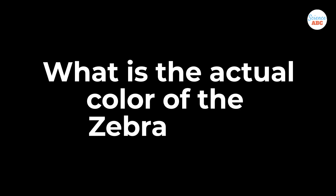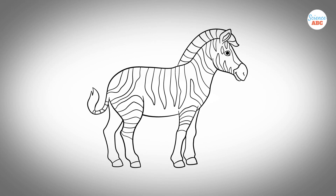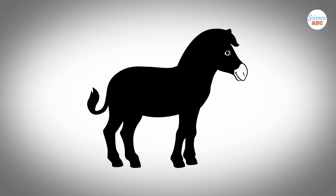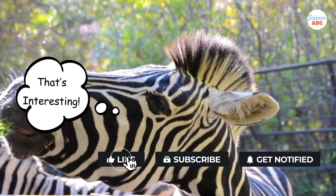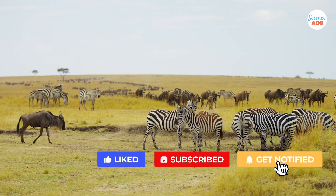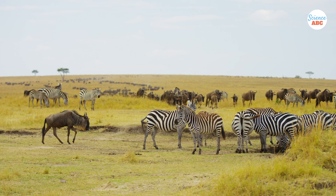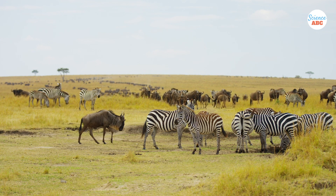What about underneath the fur? What's the actual color of a zebra's skin? If you were to, hypothetically, shave a zebra, you'd find a black or brown hide with absolutely no stripes. The processes for skin pigmentation and hair pigmentation are different, so zebra skin lacks those iconic stripes. That just goes to show that underneath it all, a zebra really is just black with white stripes.